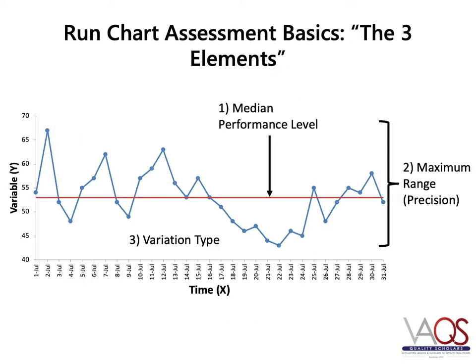There are three steps to analyzing a run chart. First, you need to review the median performance of the system and determine if the median value is clinically acceptable. For example, in a primary care clinic, it is unacceptable for your median value for the percentage of eligible patients receiving colon cancer screening to be 50%. The second step is to measure the maximum range or precision — the difference between the highest and lowest point. You may have a process where the median is acceptable, but there is a wide range in data points resulting in performance that looks very different week to week or month to month. The final step is to identify the variation type: common cause variation, which is the variation that occurs by chance, and special cause variation, which is a statistically significant change in system performance.